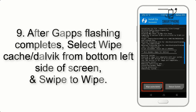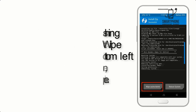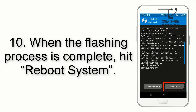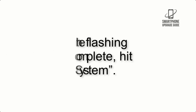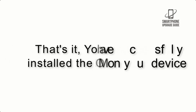Step 9: After GApps flashing completes, select Wipe Cache and Dalvik from the bottom left side of the screen and swipe to wipe. Step 10: When the flashing process is complete, hit Reboot System. That's it — you have successfully installed the ROM on your device.